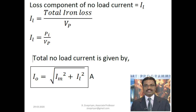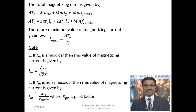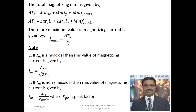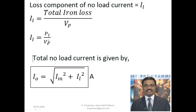Next, we calculate the loss component current IL. IL equals the total iron loss divided by the primary voltage VP: IL = Pi / VP. The total iron loss is fixed for a particular transformer. Now we have both components and can calculate the no-load current: I0 = √(IM² + IL²), where IM is the magnetizing current and IL = Pi / VP is the loss component. This gives the no-load current I0 for the single-phase core-type transformer.